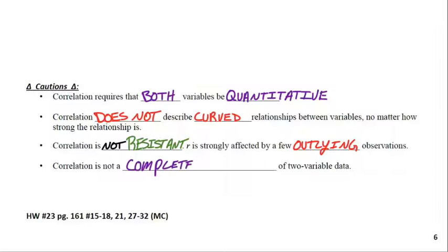And the last thing here, correlation is not a complete summary of two variable data. It only tells you about two things, the strength and the direction of the association. It doesn't tell you about the form, and it doesn't tell you where the outliers are. If you want to provide a complete summary, you've got to actually look at the scatterplot, and then don't forget you've got to talk about DOFS, D-O-F-S.